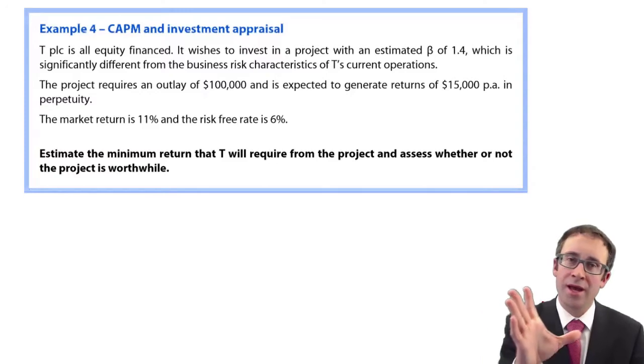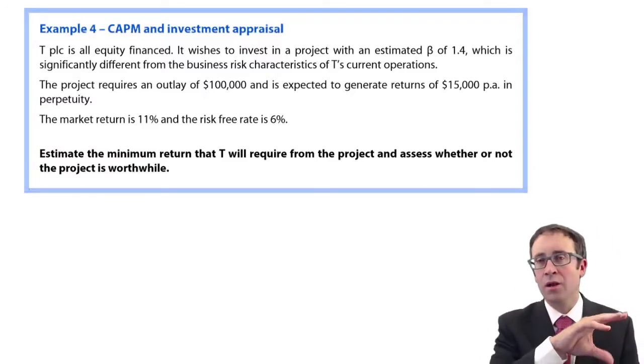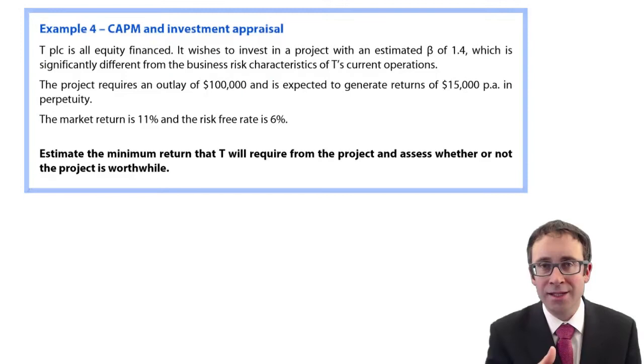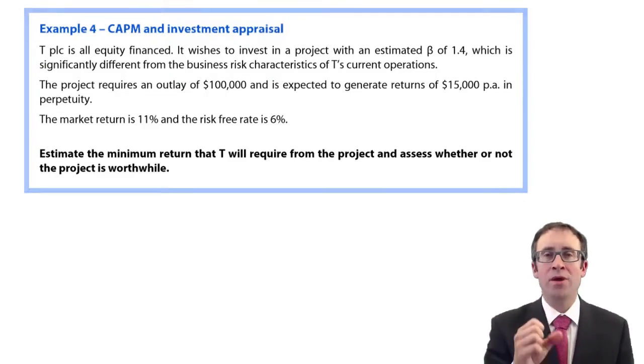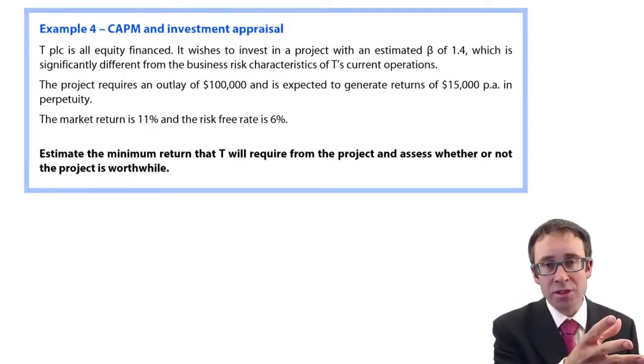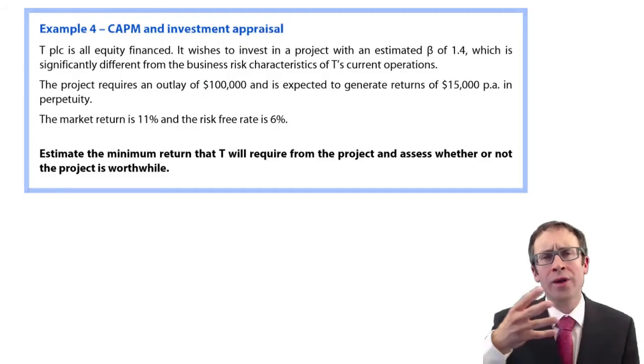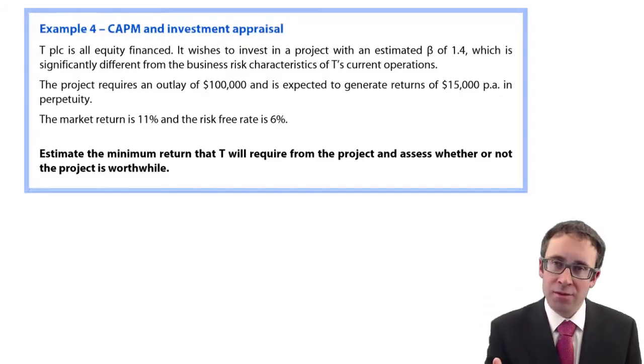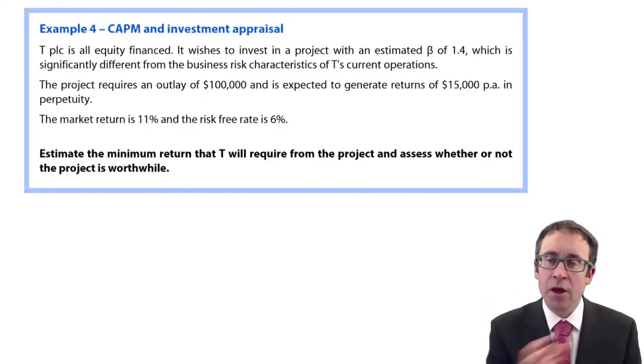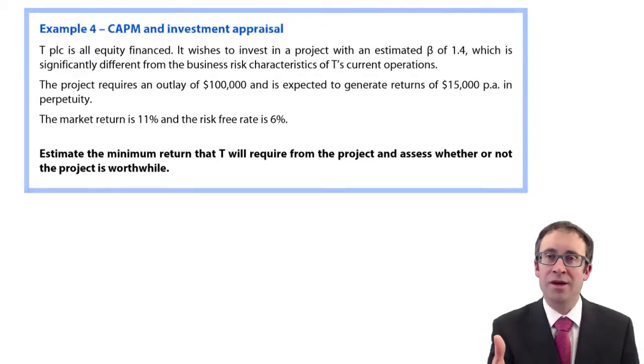The focus is looking at the business risk and the specific business risk, the systematic business risk. We've diversified away the specific business risk, so we are only faced with the systematic business risk. We need a return for that systematic business risk, assuming we are well diversified.